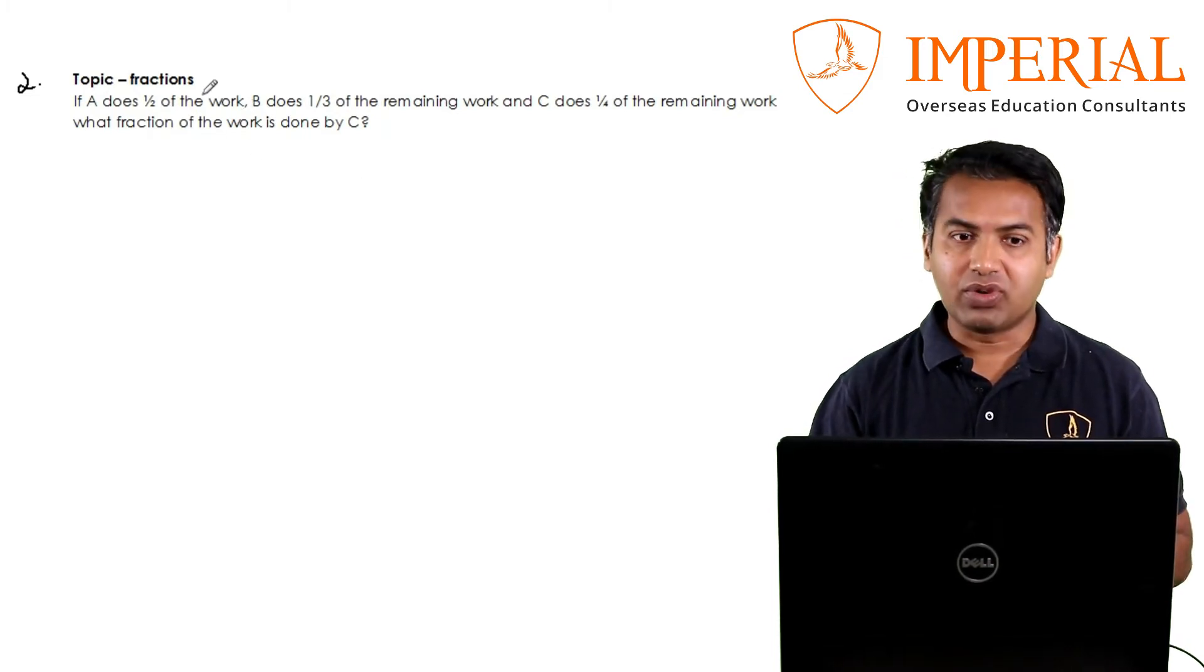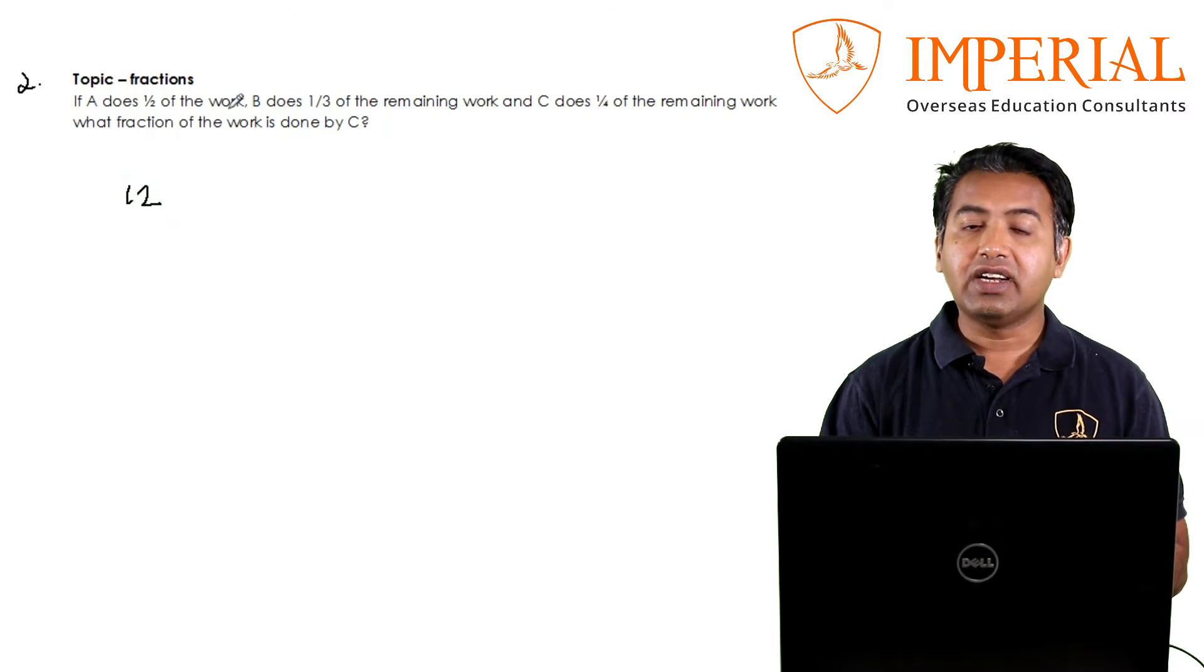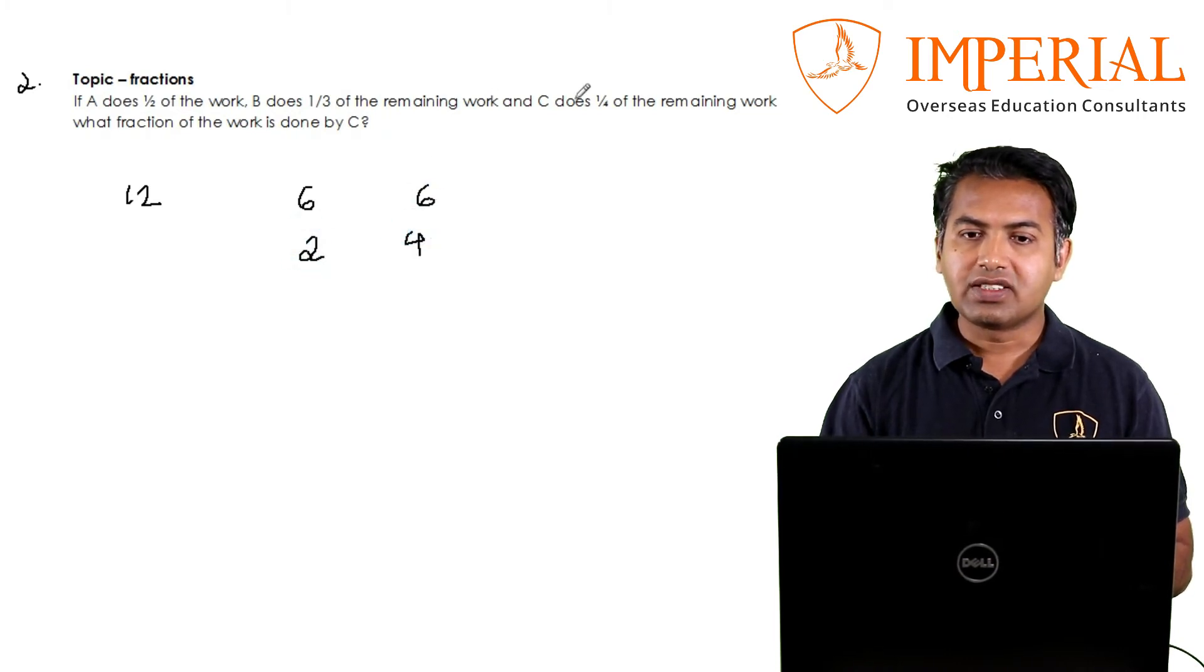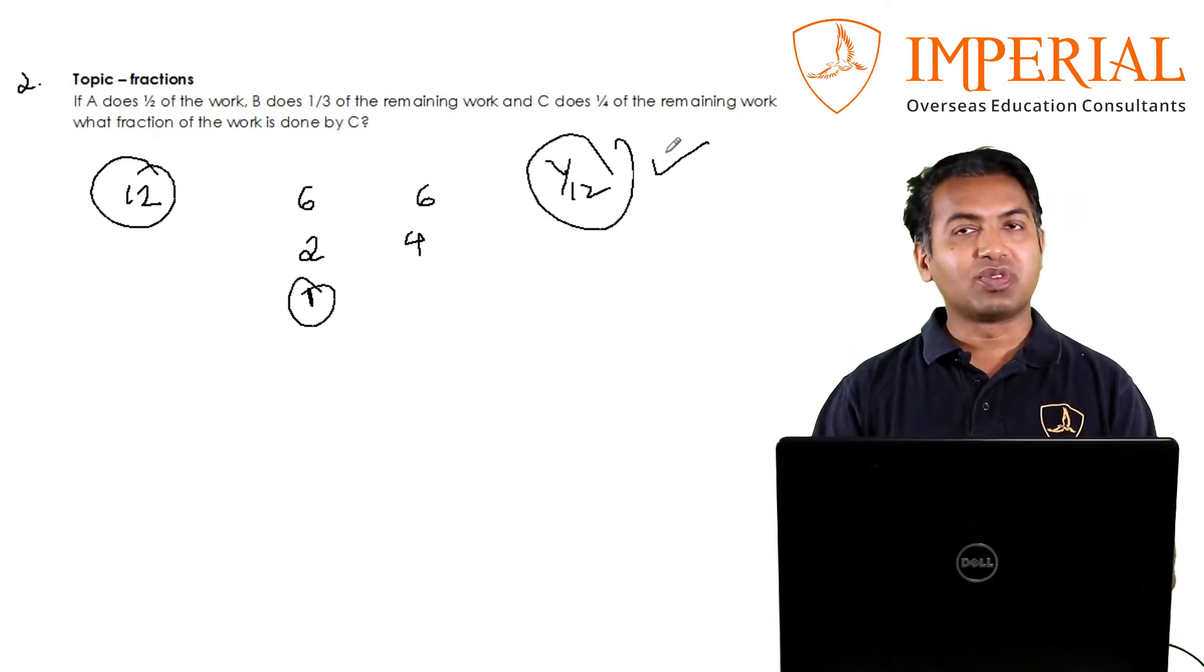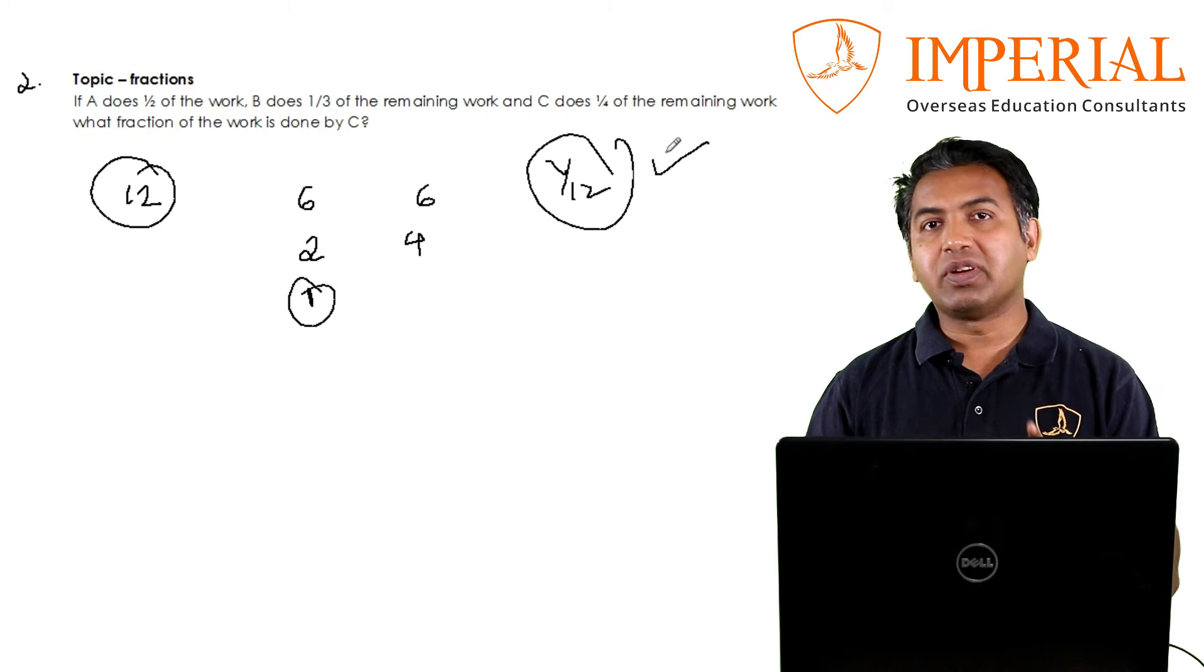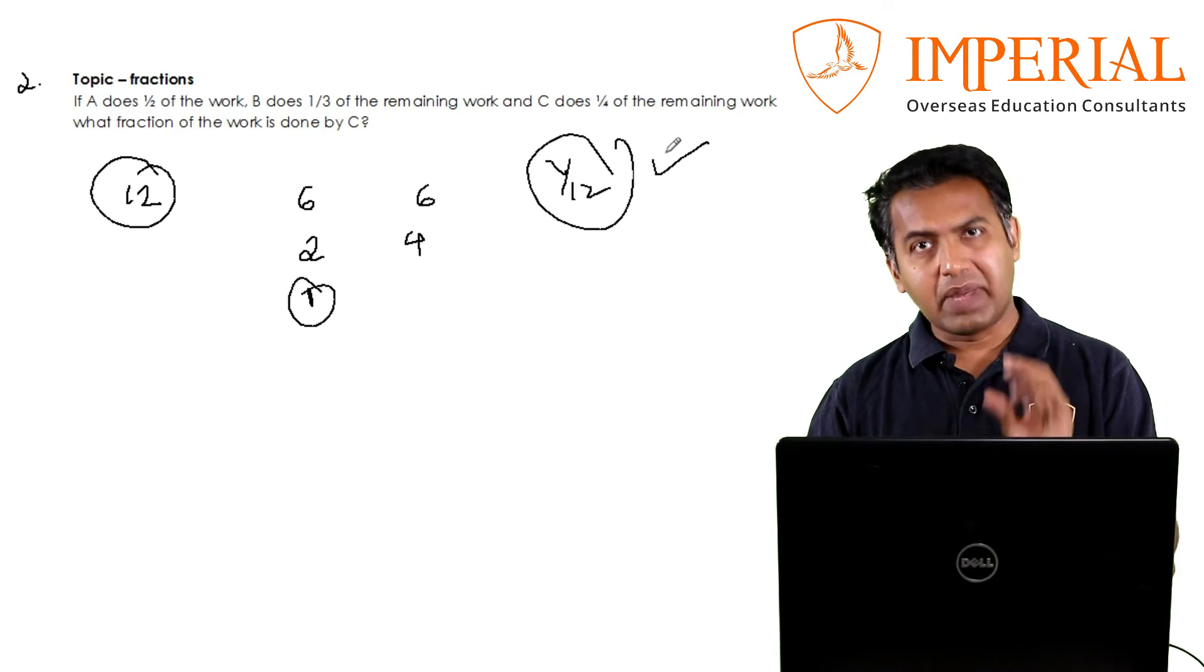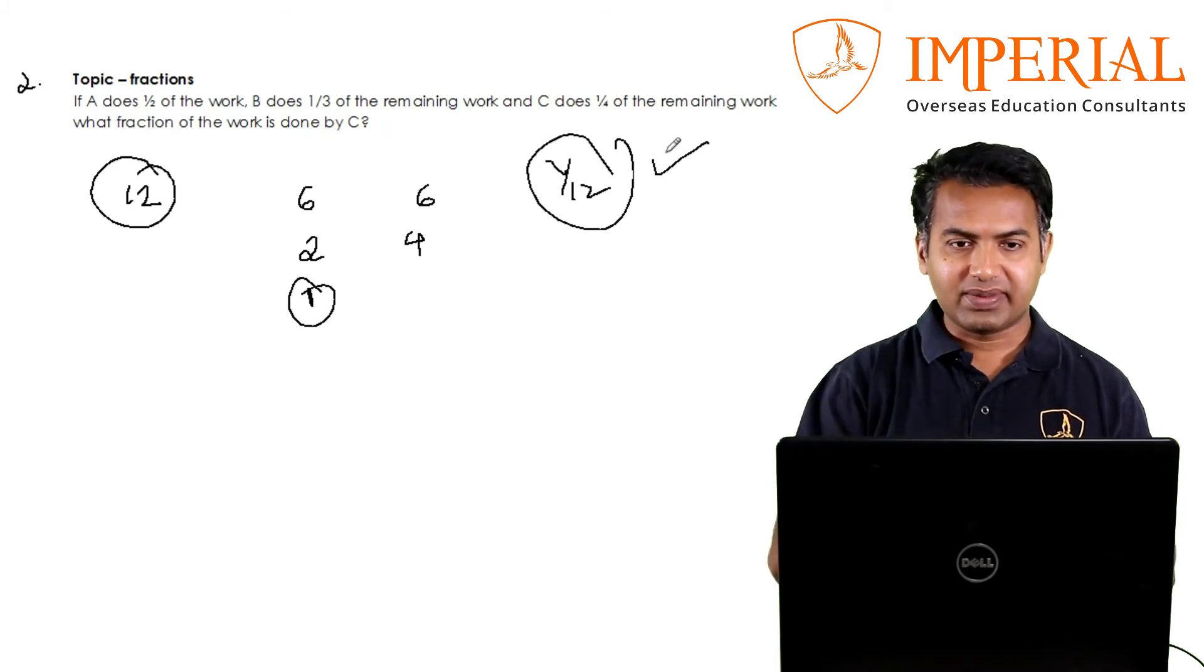Here's the trick: in fractions, try and avoid them. How to avoid them? Take LCM of the denominators 2, 3, and 4. Start with 12. A does half of the work, so A does 6, left is 6. B does one third of the remaining, so B does one third of 6, which is 2. Left is 4. C does one fourth of the remaining, so C does one fourth of 4, which is 1. What fraction did C do? It is 1 by 12. As you can see, it becomes so fast and accurate. This is another trick. Every class you'll be learning a lot of tricks, shortcuts, concepts and methods to solve questions.